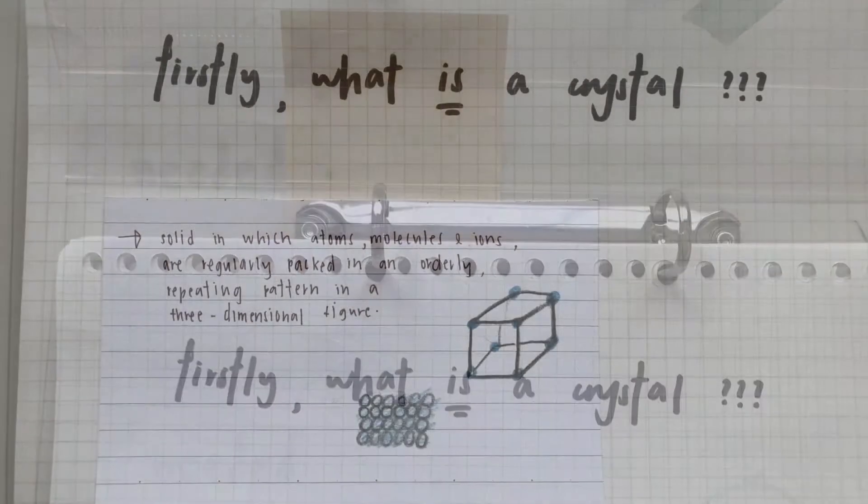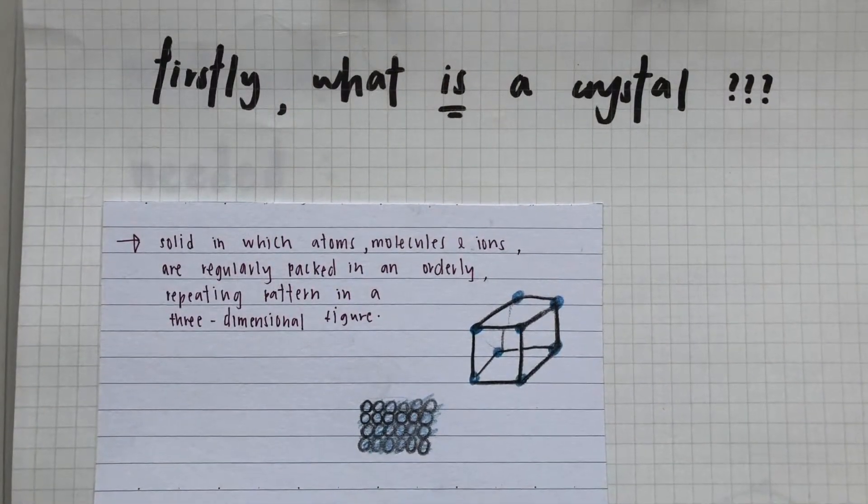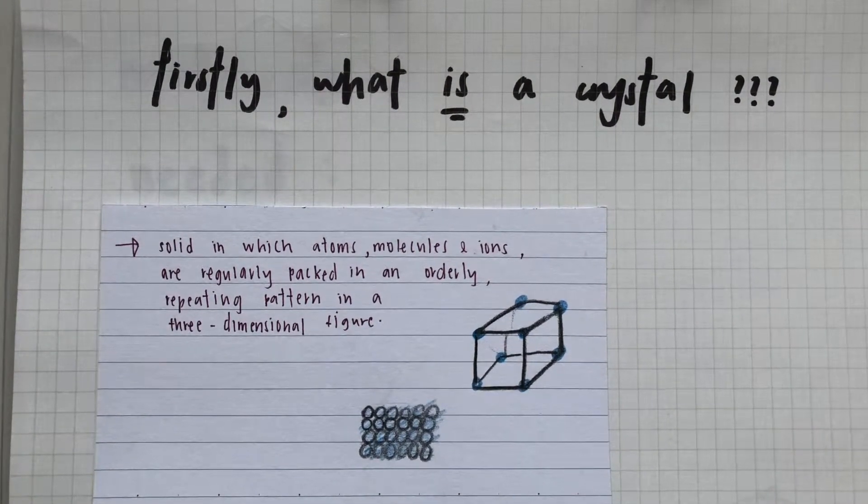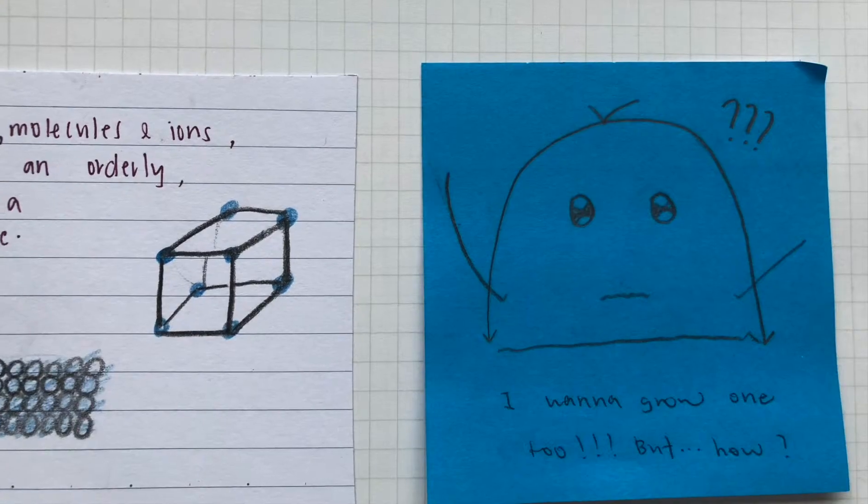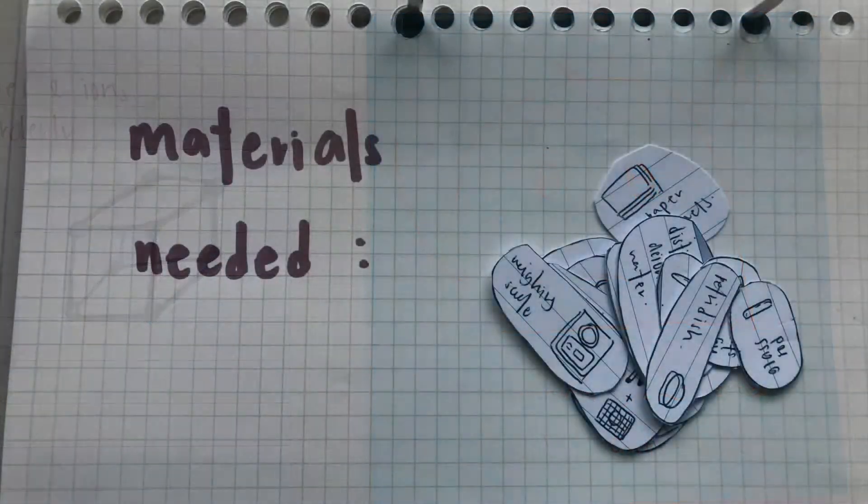We did some research and found out that a crystal is a solid in which atoms, molecules and ions are regularly packed in an orderly repeating pattern in a three-dimensional figure. We found this information cool and wanted to grow a crystal as well.